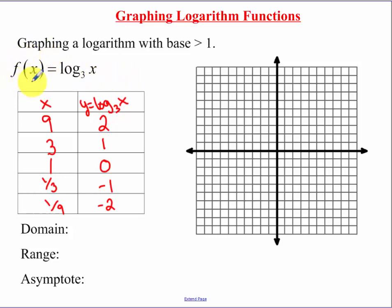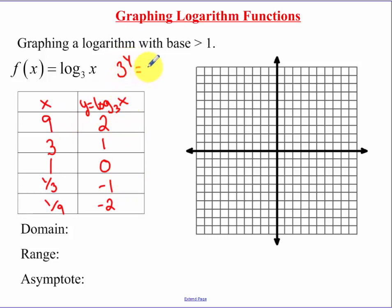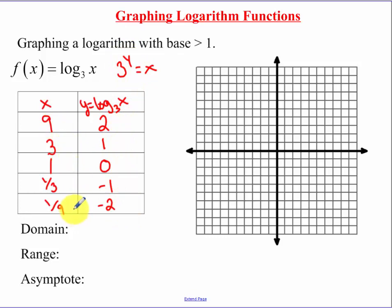What you could also do is plug in known things for y. Notice how these points are very common values that we've been picking for x, typically when we've been graphing. We used these values when we graphed an exponential. So if you want to convert it to an exponential, you're going to be picking values of y and then getting your x's out.